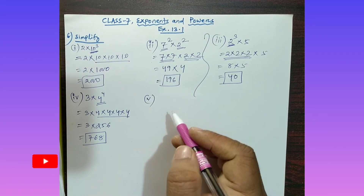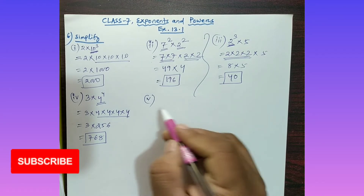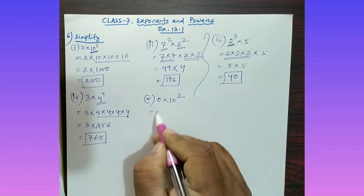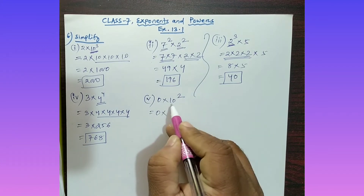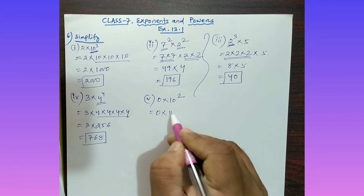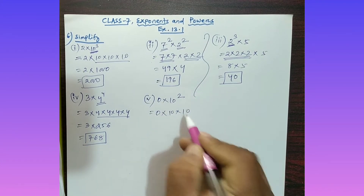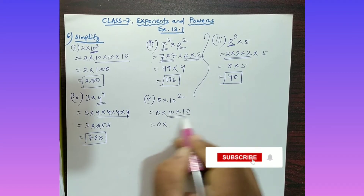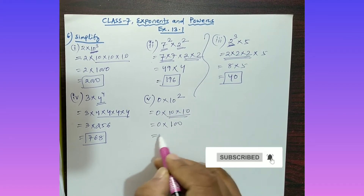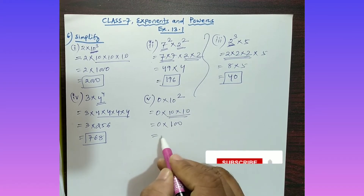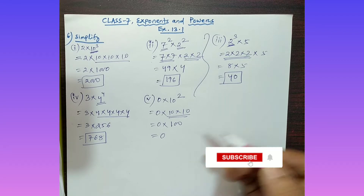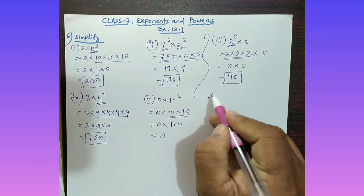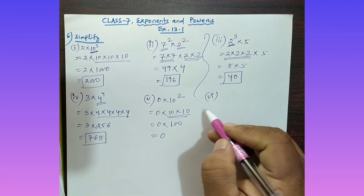Part (v): Simplify 0 into 10 squared. Ten squared means 10 is multiplied 2 times, giving 100. But 0 multiplied by any number gives 0. So the answer is 0.